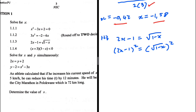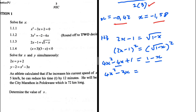Expanding the left side: 2x times 2x is 4x squared, 2x times minus 1 is minus 2x, multiplied by 2 gives minus 4x, plus 1 from (minus 1)(minus 1). On the right-hand side we get 1 minus x. Collecting terms: 4x squared minus 4x plus x gives minus 3x, and taking 1 to the left gives 4x squared minus 3x equals 0. We can take a common factor of x, giving x(4x minus 3) equals 0.